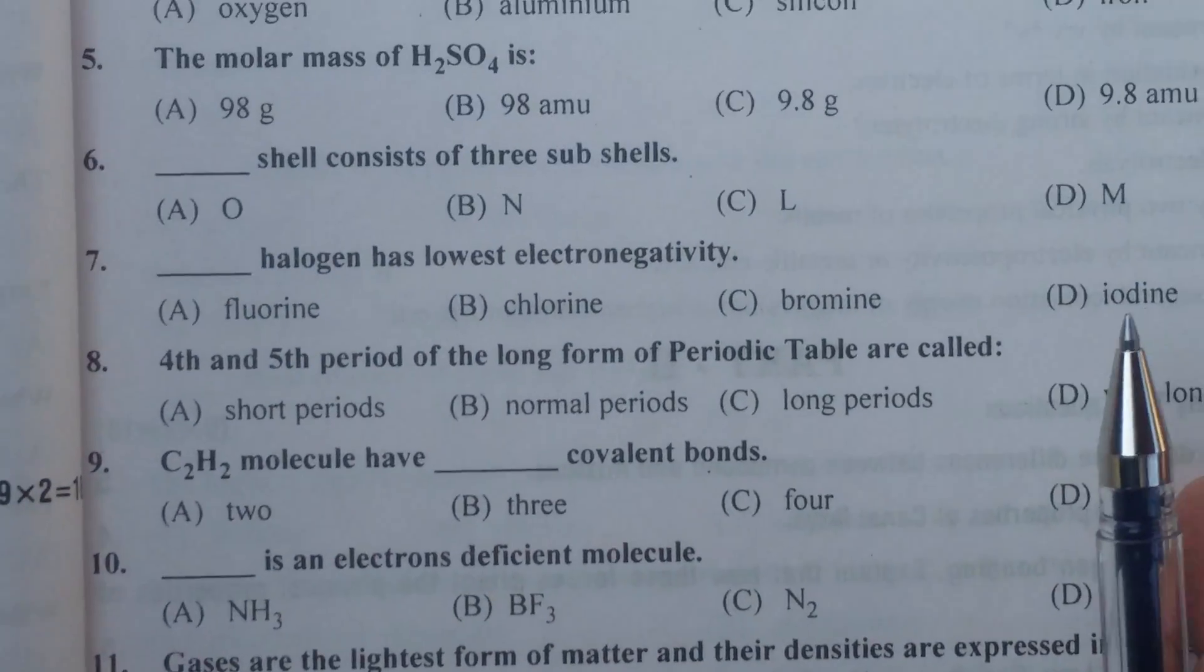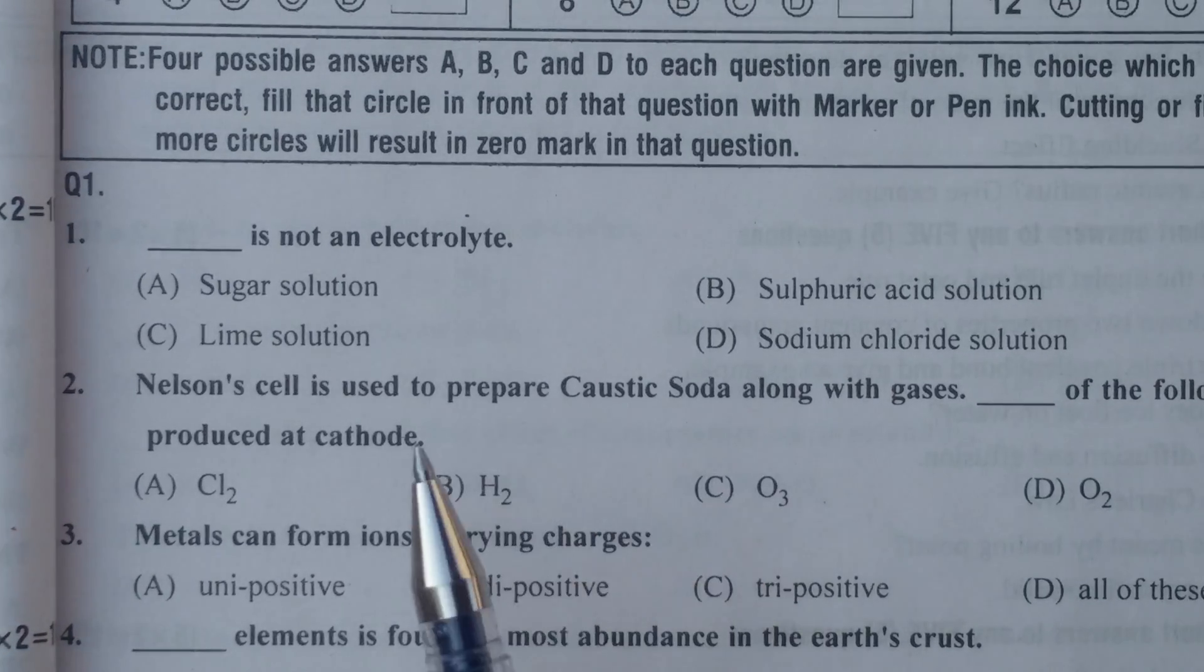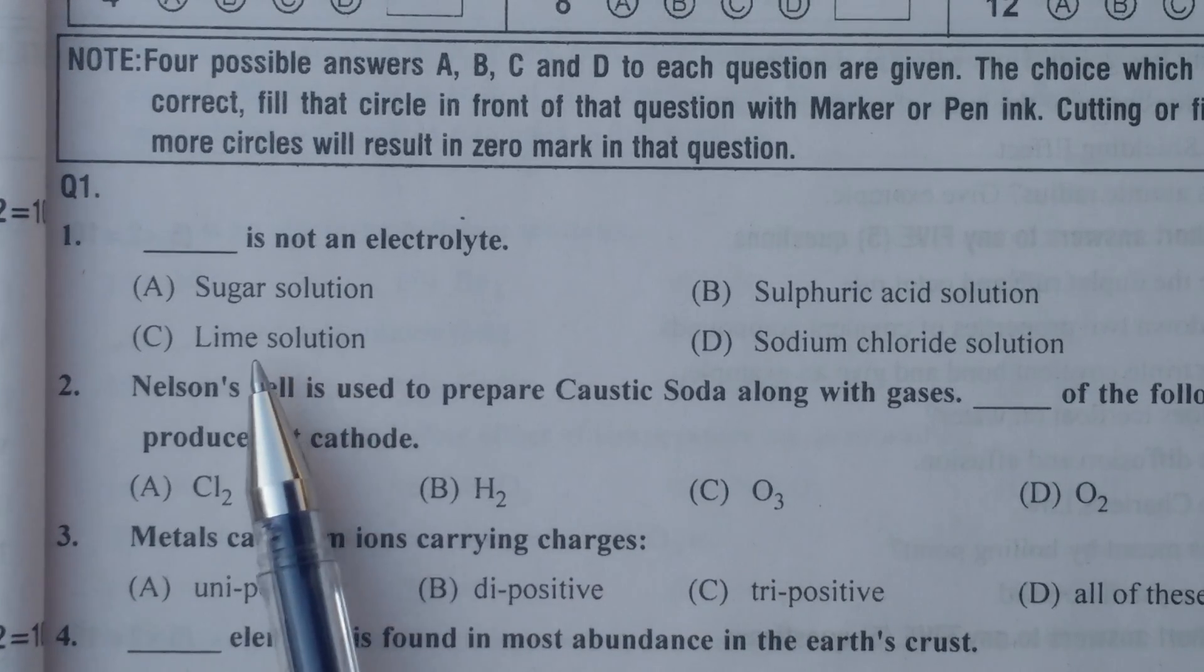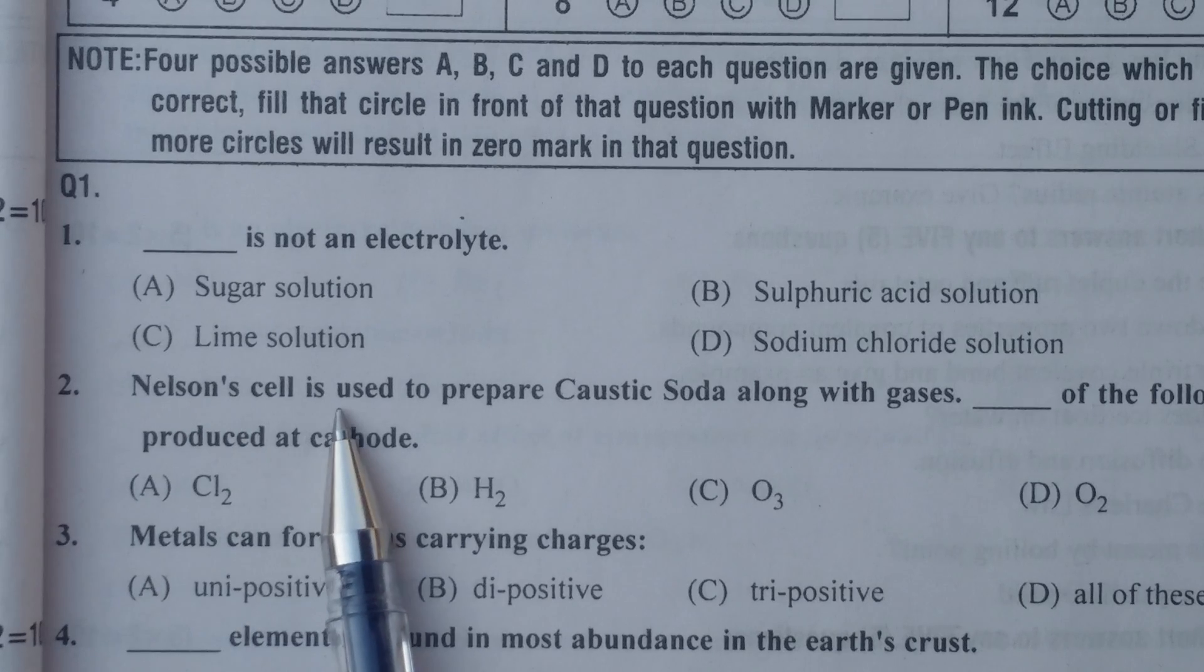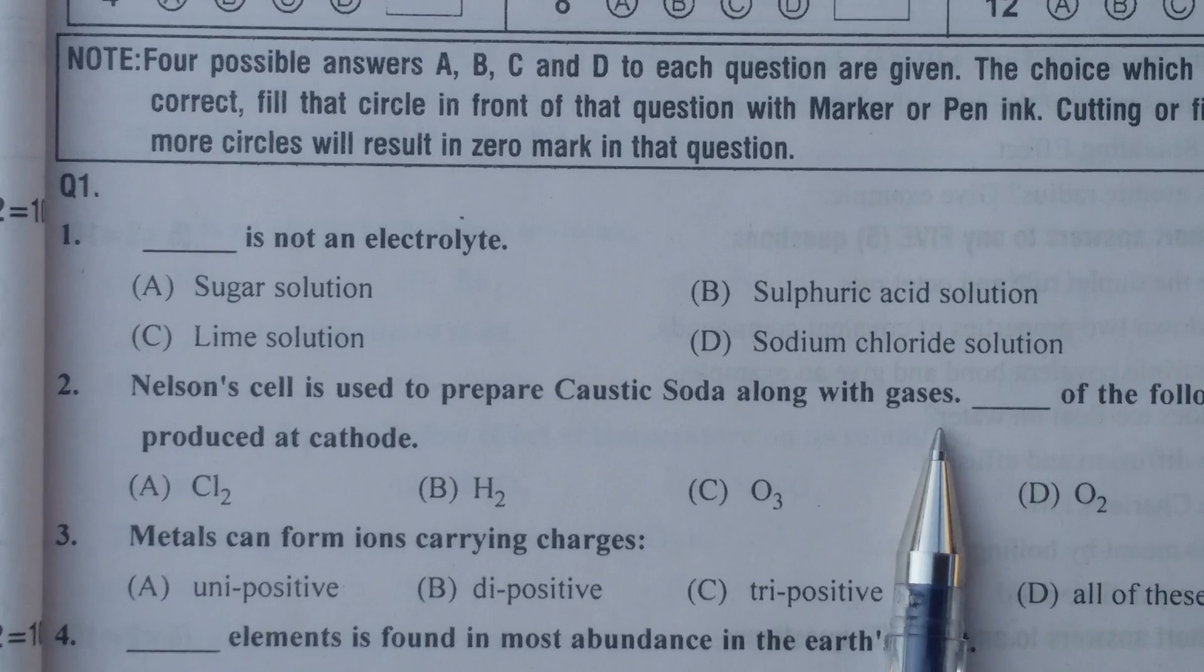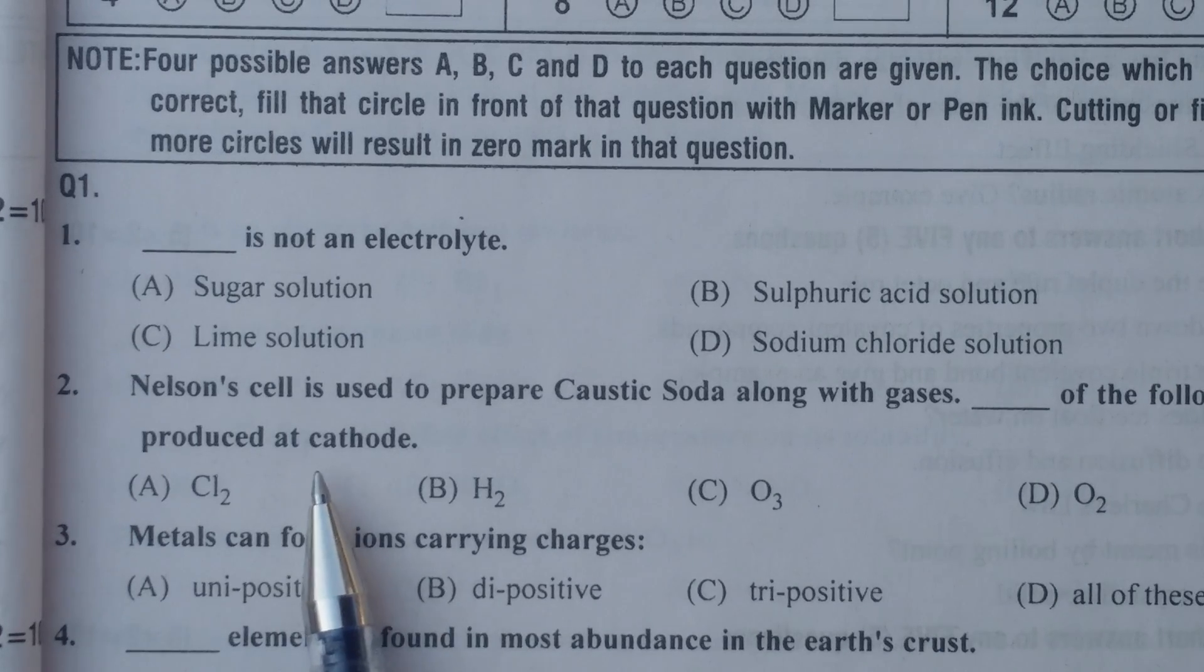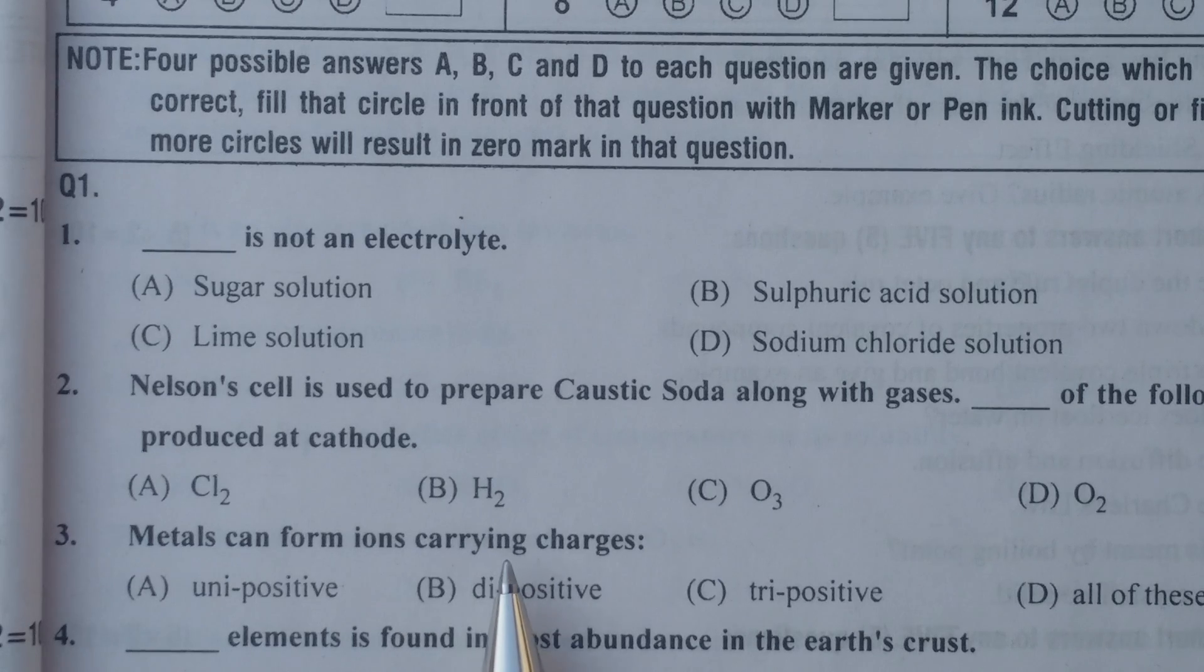Multan Board first group paper. Which is not an electrolyte? Sugar solution. Nelson's cell is used to prepare caustic soda along with gases. Which gas is produced at cathode? Hydrogen.